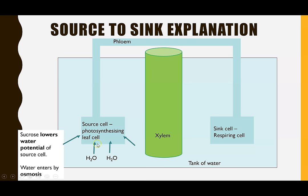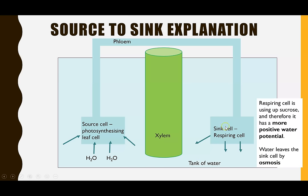Because the photosynthesizing leaf cell is creating glucose, sucrose, and other soluble organic substances, this lowers the water potential of the source cell. As a result, water from surrounding cells — or in this model the tank of water — moves into the source cell by osmosis. At the sink cell, respiration is using up the soluble sugars, so that cell has a more positive water potential compared to its surroundings, meaning water moves out of the sink cell by osmosis.